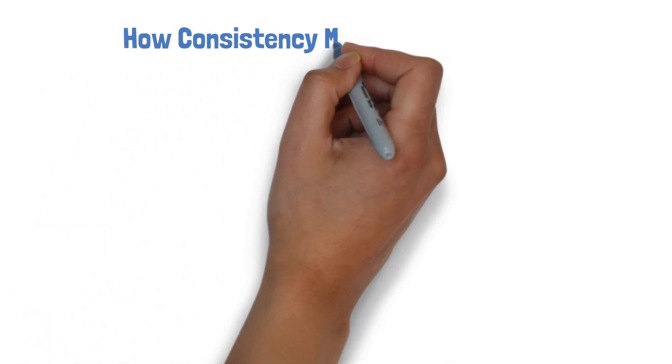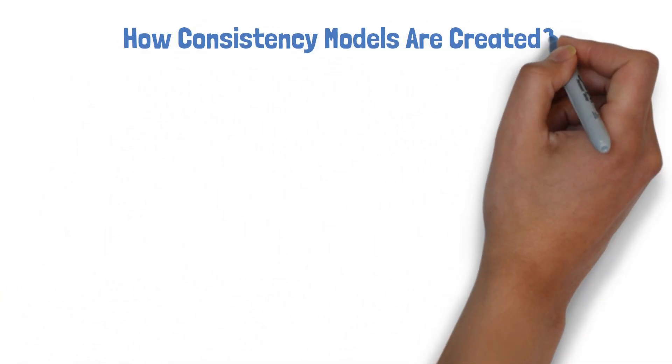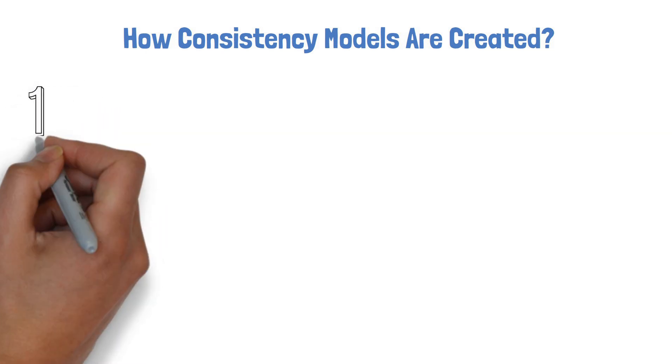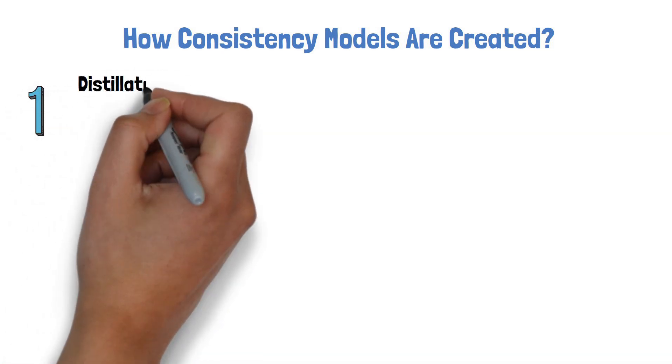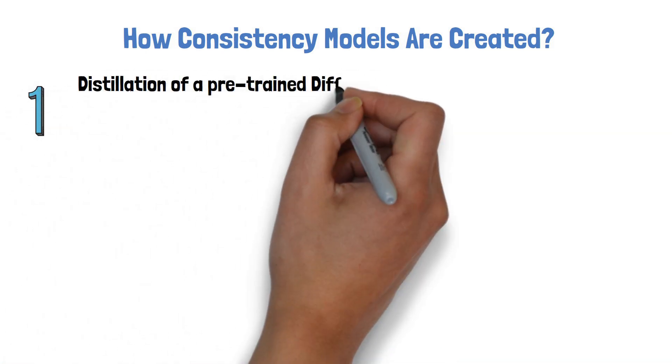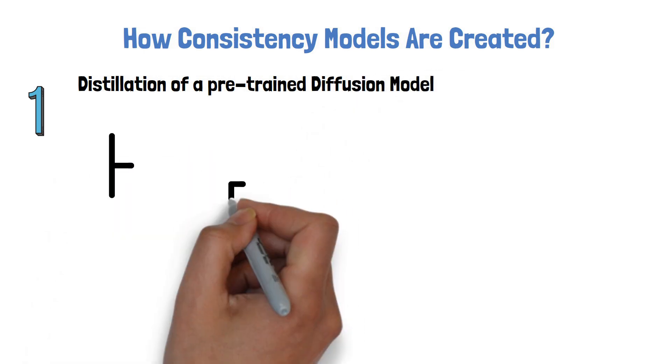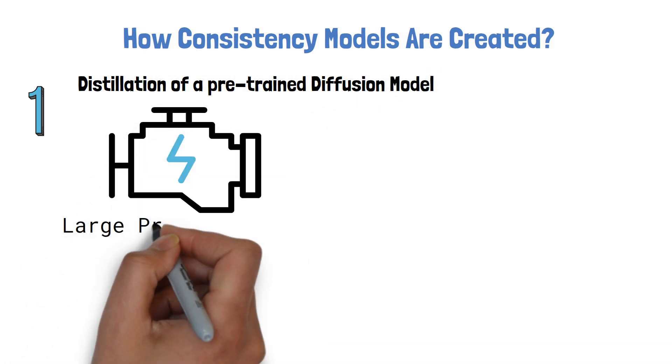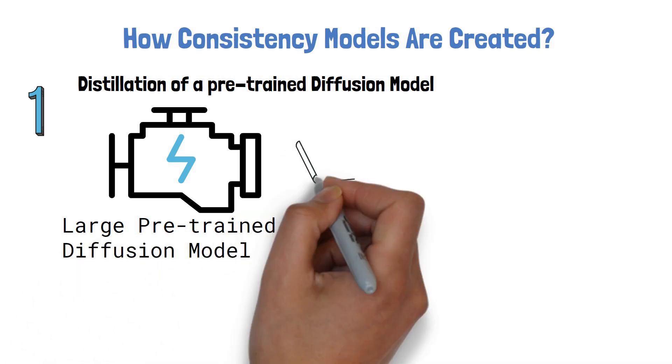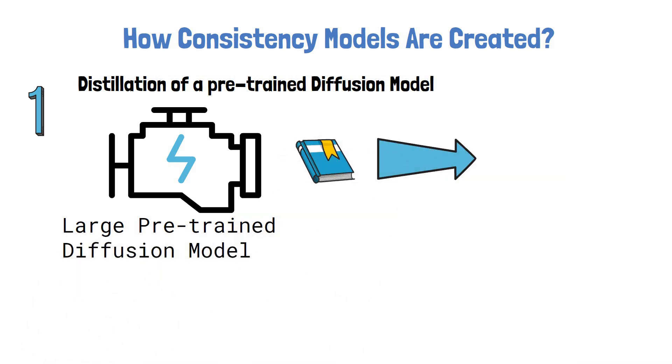Let's move on to see how consistency models are created. There are two possible ways to train a consistency model. One way is distillation of a pre-trained diffusion model. What it means is that we take a large pre-trained diffusion model, such as Stable Diffusion, and transfer knowledge from it to a new, smaller consistency model.